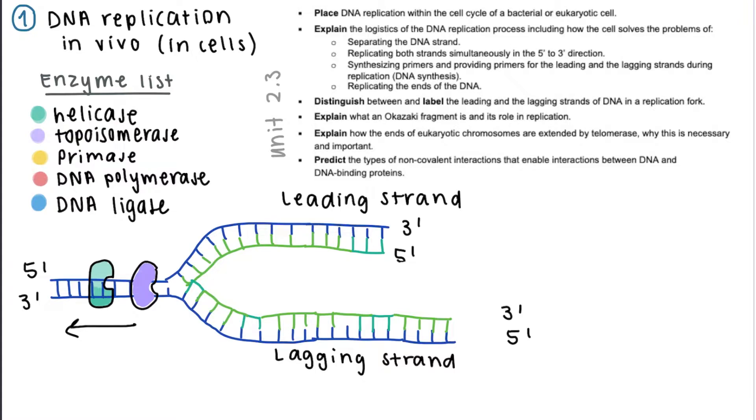Now we're going to take a look at which learning objectives we have already covered. We talked about the cell cycle in the beginning. We also spoke about how helicase separates the DNA strand, how both strands are replicated in the 5' to 3' direction.